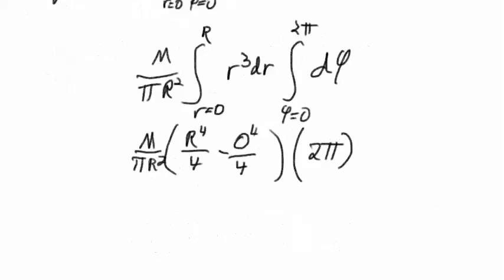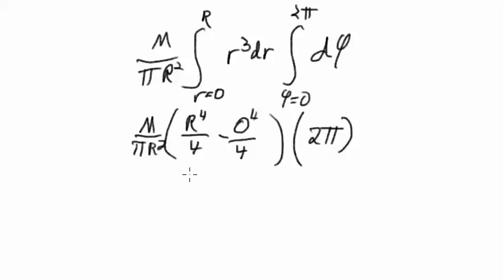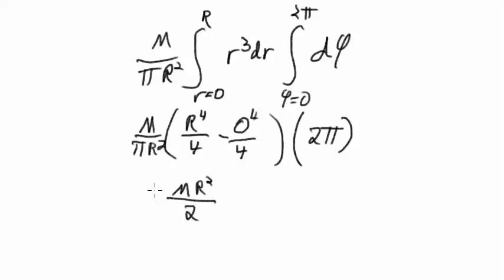The m over pi R squared part copies down. The r integral becomes R to the fourth over four minus zero, and the d-phi integral from zero to 2 pi is just 2 pi. We can cancel: R to the fourth over R squared gives R squared on top, and pi over 2 pi gives a factor of one-half. So the moment of inertia of a solid disk is mR squared over 2.